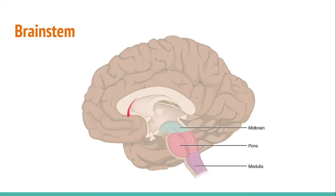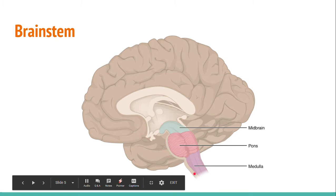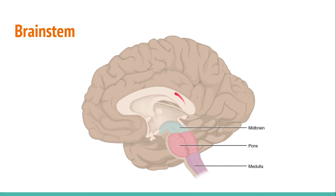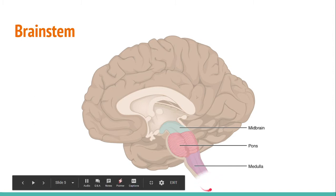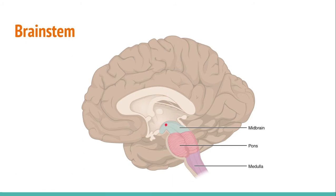The midbrain is that large hollow part in the middle of the brain and is responsible for vision, hearing, eye movement, and body movement. The front part of the midbrain is where you find a big bundle of axons, which are things that help deliver messages — this bundle is called the cerebral peduncle. These axons travel from the cerebral cortex, down through the brainstem, to the front part of the midbrain.